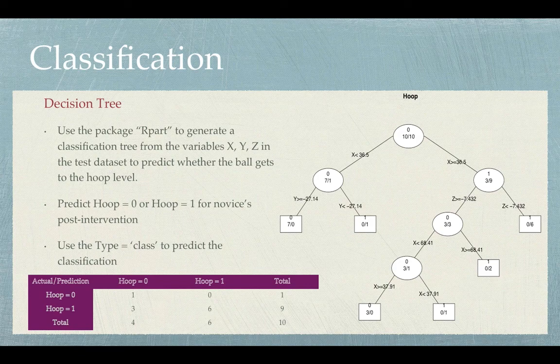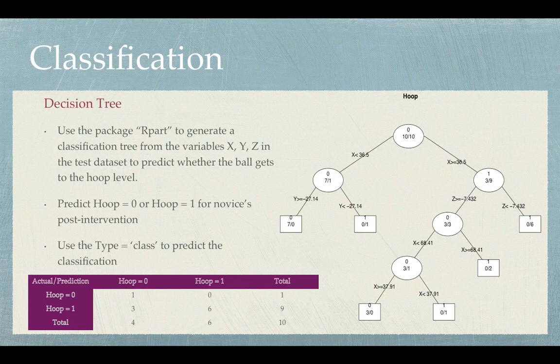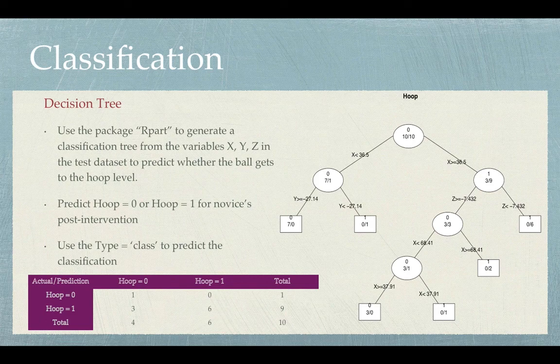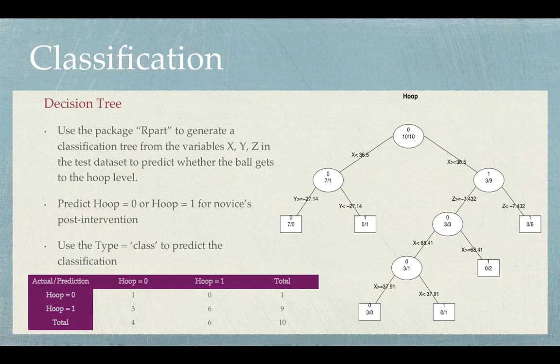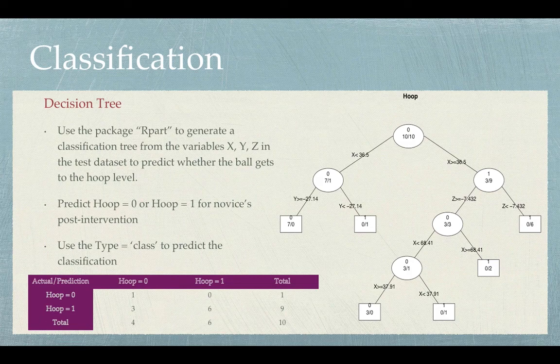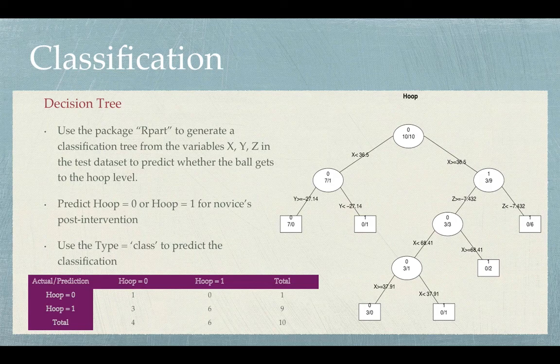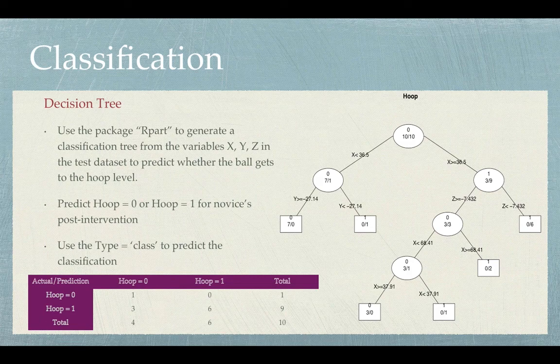Looking at the decision tree on the right, we see that for an x-value less than 36.5, it predicts correctly seven out of ten will be hoop equals to zero, and incorrectly one out of ten hoop equals to one. And for x greater than 36.5, it predicts correctly nine out of ten hoop equals to one, and incorrectly three out of ten hoop equals to zero. And following the same logic, it predicts into finer branches.